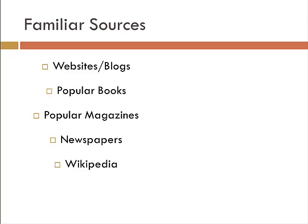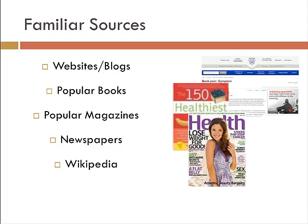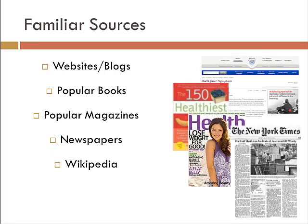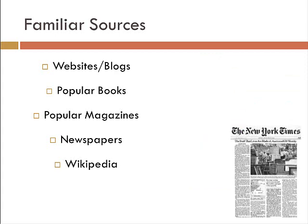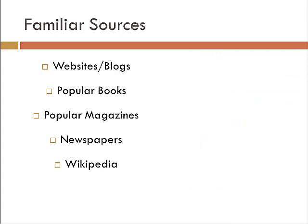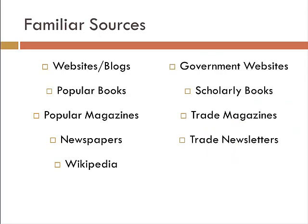Today we have access to so many sources of information — the internet, books, magazines, newspapers, and specific resources like Wikipedia that provide lots of information. But for scholarly research we need to broaden the types of sources we use. There are a number of scholarly and professional sources out there that can provide more accurate and detailed information for what it is we are investigating.